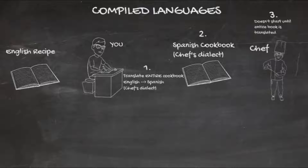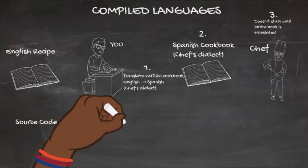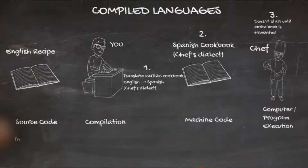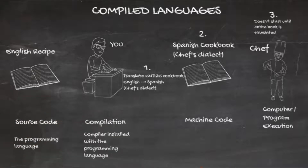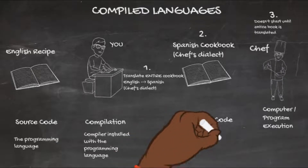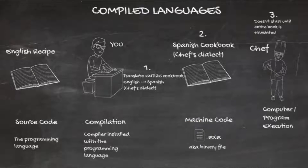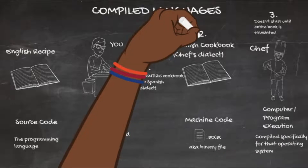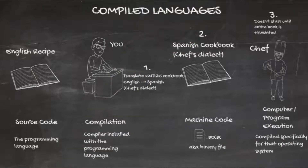Each part of that analogy represents some tool or component of the compilation workflow. The English recipe represents the source code — the code written by the developer. You represent the compiler, which gets installed during the initial installation of the language. The translated cookbook represents the artifact produced from compiling the source code — that file is known as an executable, also referred to as a binary file. The chef following the instructions represents the computer executing the translated instructions contained in the binary file.